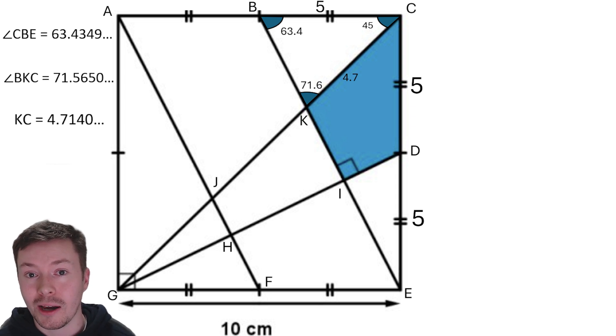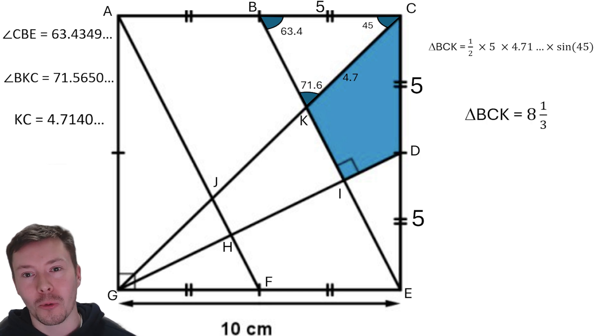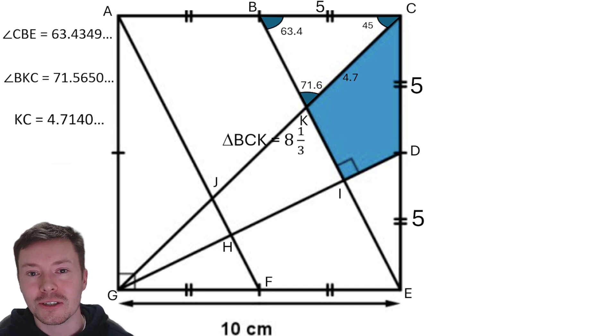Now I'm ready to work out the area of triangle B, C, K. I've got everything I need because the formula that I'm going to use is not the one that you're taught in the early years of secondary school, but the one that you find out probably in year 10, year 11, half AB sine C for non right angled triangles. So that is a half times by one side times by the other side times by sine of the angle in between those two sides. So a half times 5 times 4.71 times sine 45. That gives an answer for triangle BCK of 8 and a third, which is pretty neat because it's an exact value and it's going to hopefully make the answer a bit nicer because it should be an exact value as well.